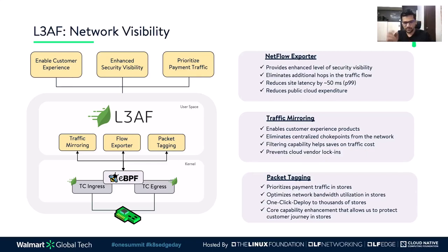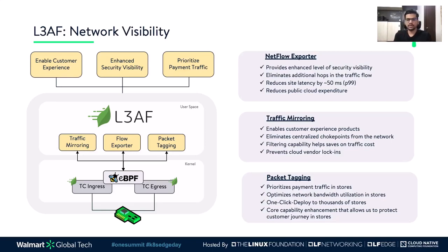The first solution is flow exporter. As enterprises start serving live traffic out of public clouds, it is increasingly important to export traffic flow data to security solutions providing advanced threat protection. Private clouds provide traffic flow data through dedicated hardware-based network appliances. However, tenants in public clouds do not enjoy a similar level of network visibility since the infrastructure layer is shared. Options like adding a network hop to process flow data increase traffic latency and add another layer of management complexity.